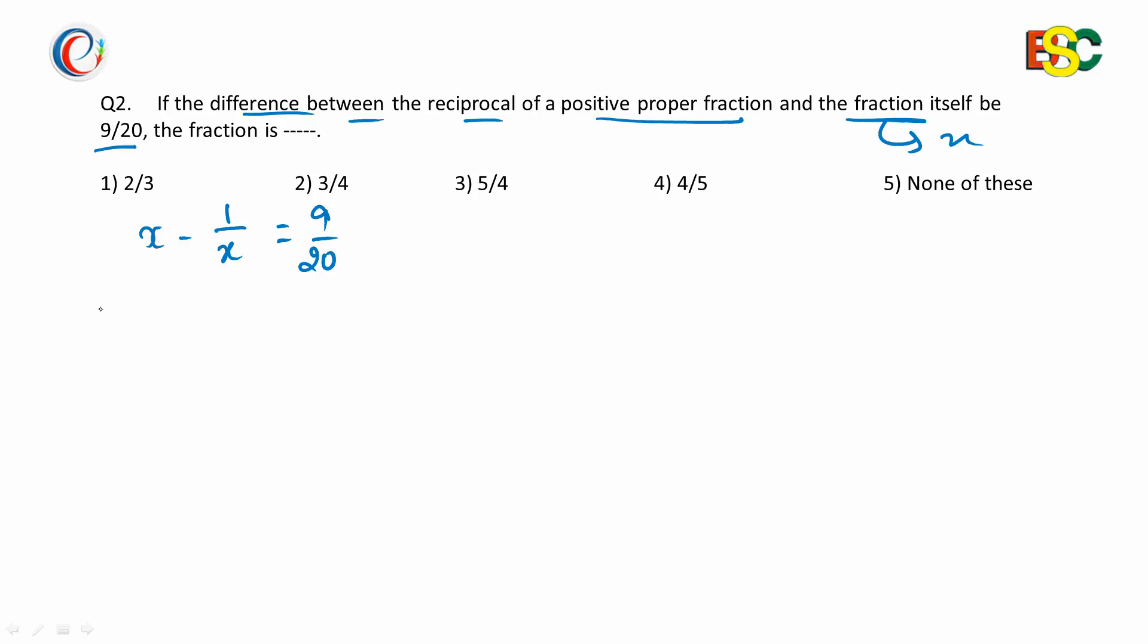On further simplification, it becomes 20x² - 20 = 9x, or we can rewrite it as 20x² - 9x - 20 = 0. This is our quadratic equation.